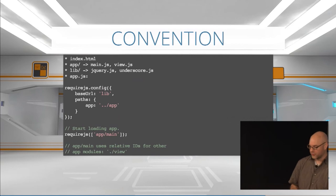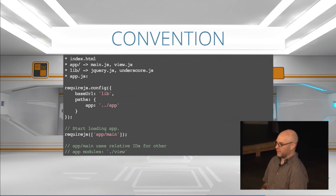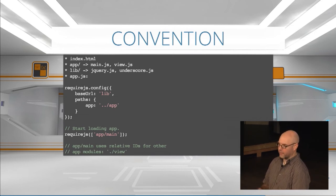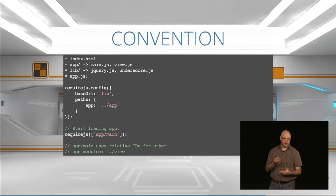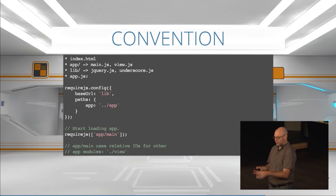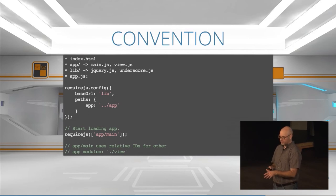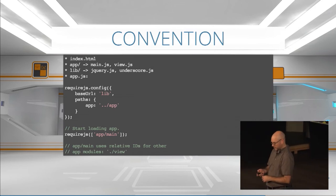This shows how that convention might work, using AMD syntax, but you can imagine how it works in the ES6 module loader. The ES module loader has a base URL you can set on it. You just set up one config for your app code, and then the lib directory is where your package manager installs dependencies — like node_modules in Node. You do the require for app/main and that's it. If app/main has a dependency on an app view file, it can just use relative IDs like ./view, and that normalizes to app/view.